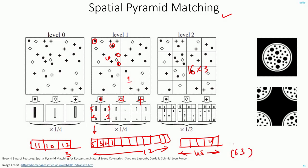One difference is that instead of directly using the raw values, you apply weighting. In level 2 (4x4 grid), you divide the values by 1/4. In level 1 (2x2 grid), you also divide the values by 1/4 — so for example, values become 5/4, 3/4, 2/4, 1/4. In level 0 (the whole image), you divide the values by 1/2. This is the weighted histogram representation using spatial pyramid matching.